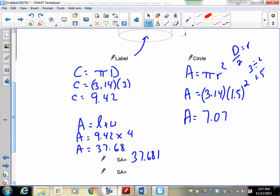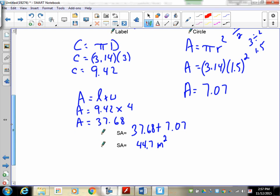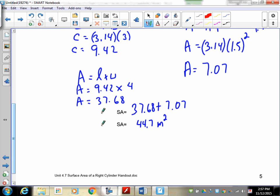Of course, our surface area calculation, 37.68 plus 7.07 has to give you 44.7. And, we are in meters squared this time. Alright? Take a look at how I did it. Watch it over again if you have to.